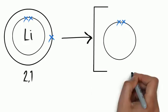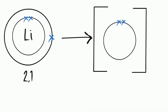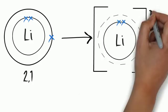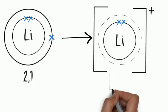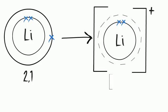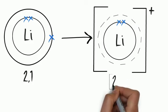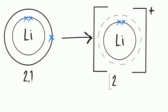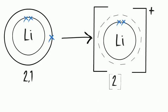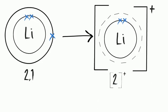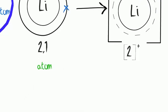In this example, the lithium atom loses its outer electron to form a lithium ion with a positive charge. The reason it's positive is because it still has three protons, which are positively charged, but now it only has two electrons, which are negatively charged. So the overall charge is plus one.